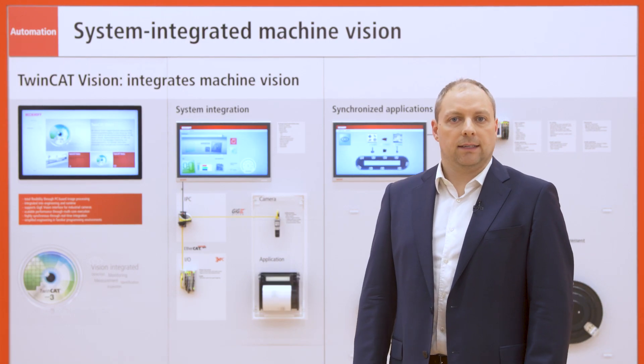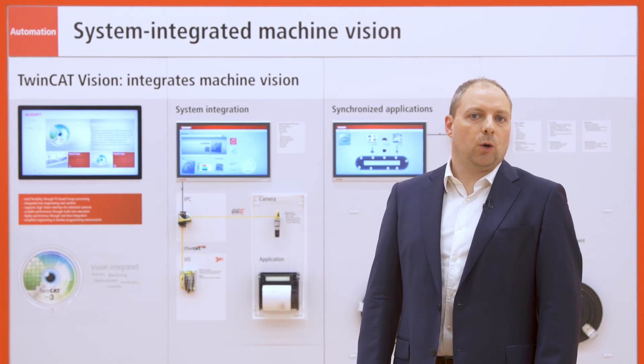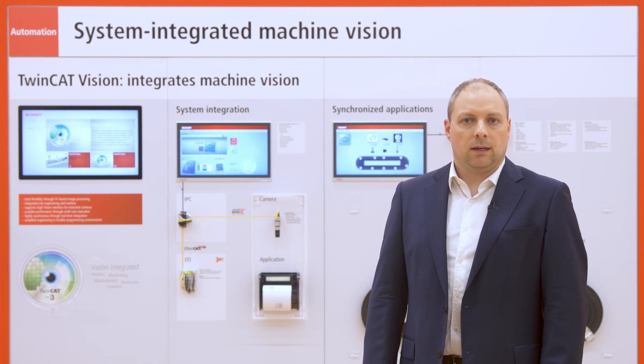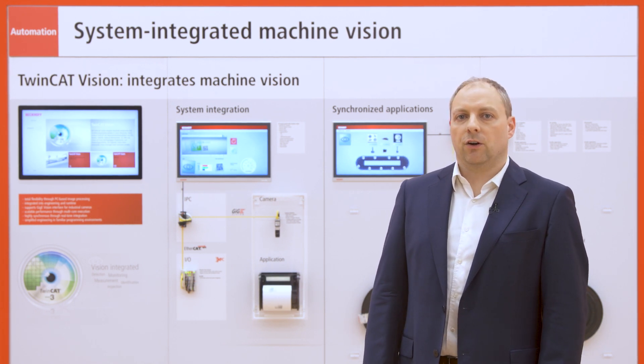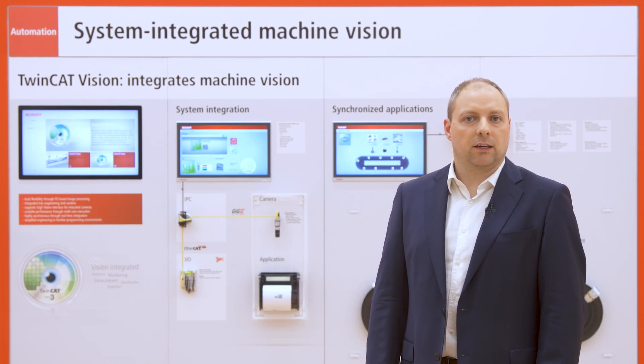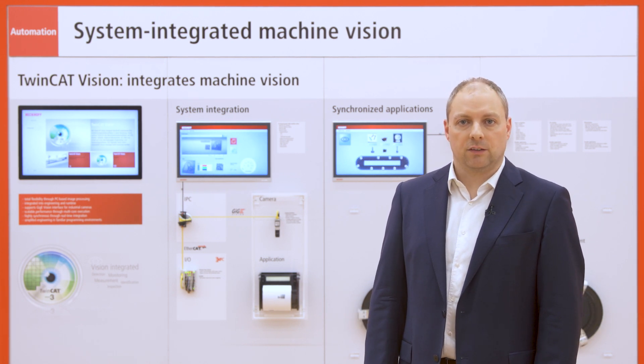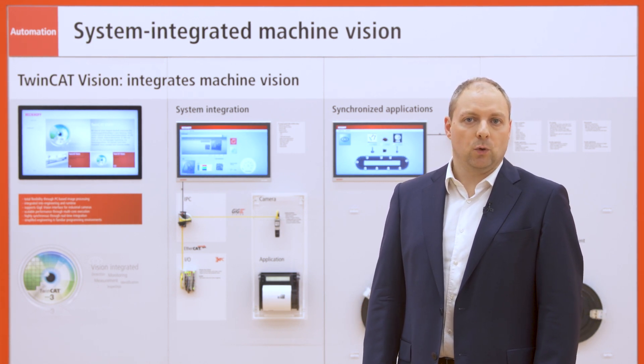This is just the beginning. Both controls are already available as a pre-release on NuGet, and we will later provide more and more controls. At the end of October we released a new version of TwinCat Vision. Since this version has so many new functions and optimizations, I can only name a few of them.